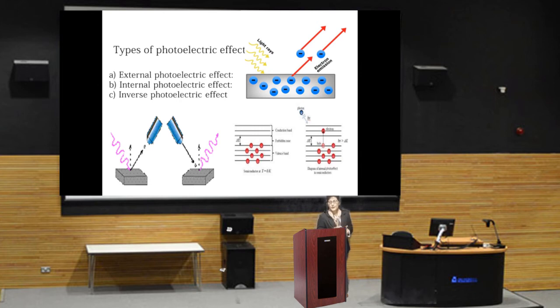External photoelectric effect is on the surface of the material, where electrons are emitted out of the metal. Second, internal photoelectric effect is the emission within the material. Emitted electrons are left in the material as conductive electrons or semiconductors. Third is the inverse photoelectric effect. It is opposite to the photoelectric effect. In this case, electrons absorbed by the atoms cause the emission of photons.